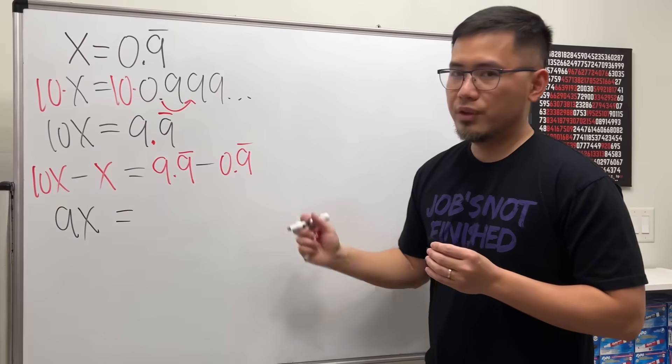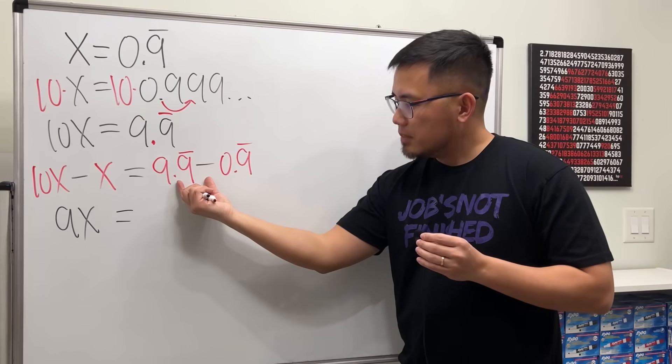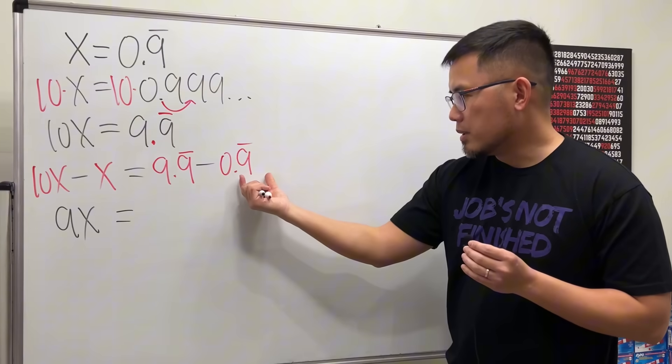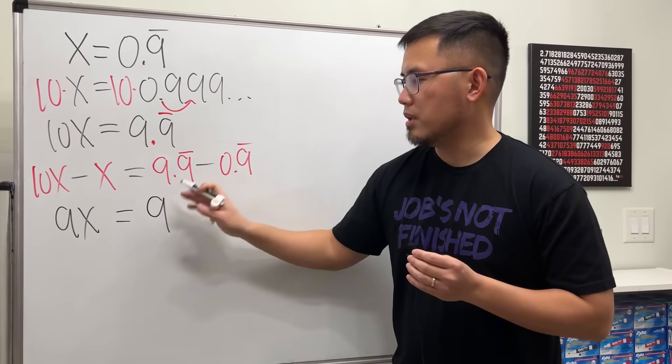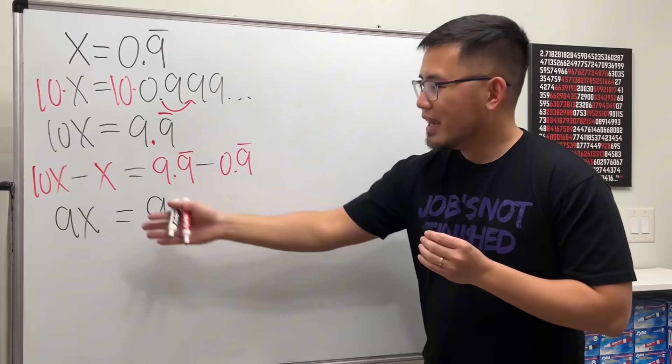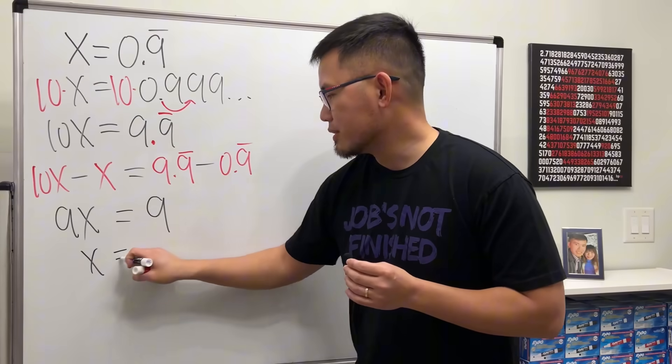And on the right-hand side, can we figure this out? Also yes, because we have infinitely many 9s right here, and then minus infinitely many 9s right here. So it's just 9 minus 0, and that will be just 9 right here. 9x is equal to 9. Divide both sides by 9, we get x equals 1.